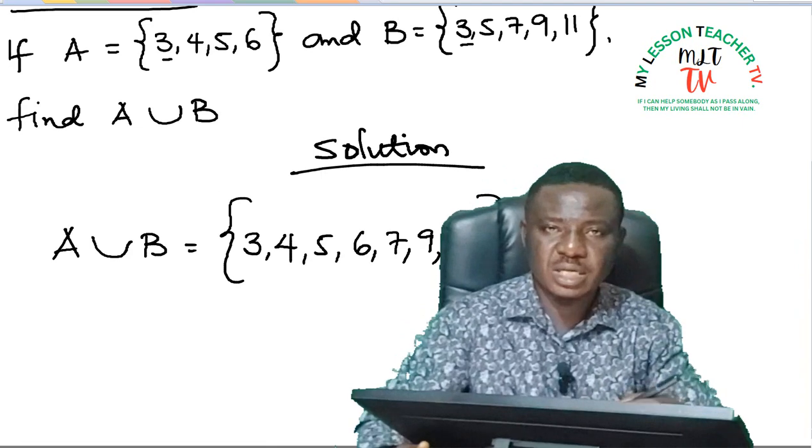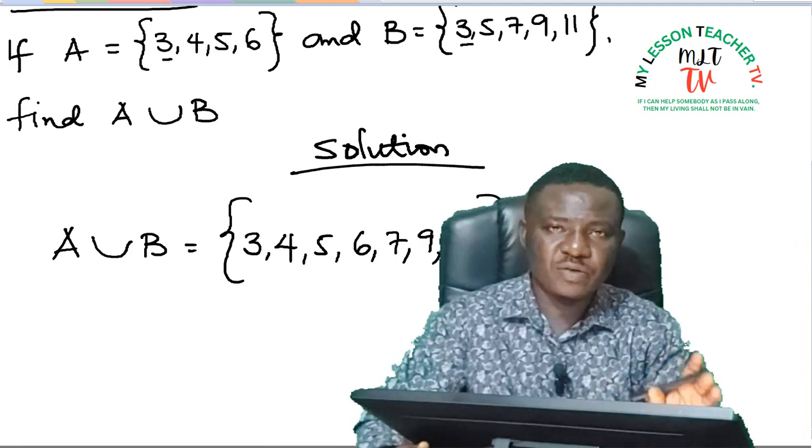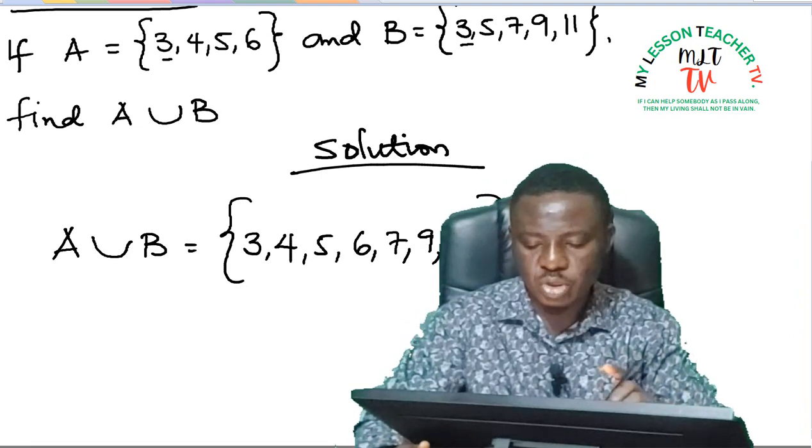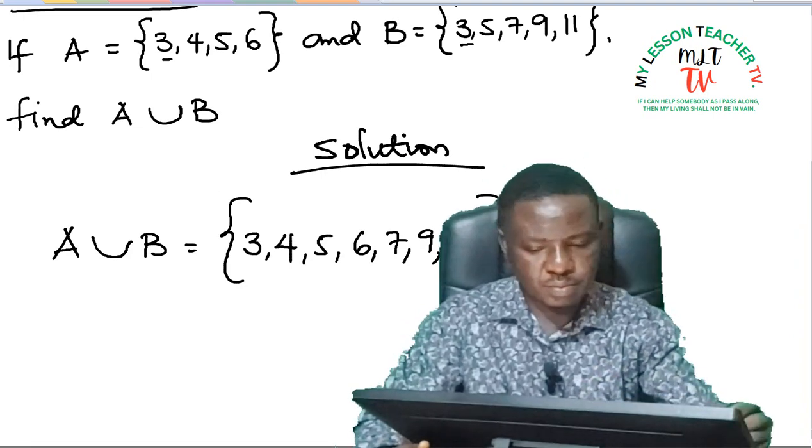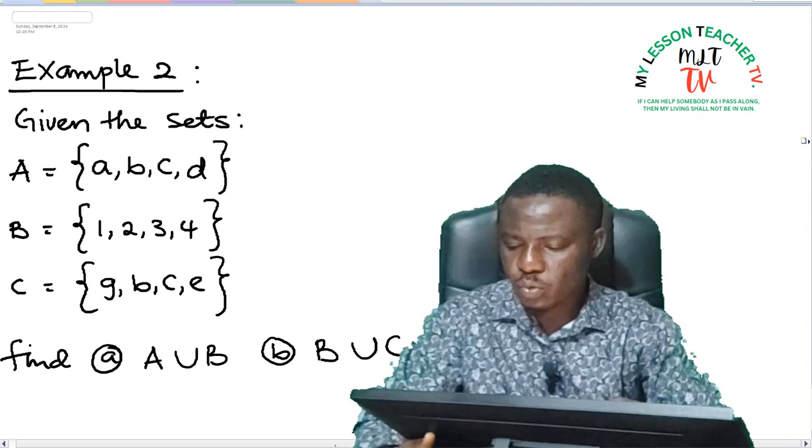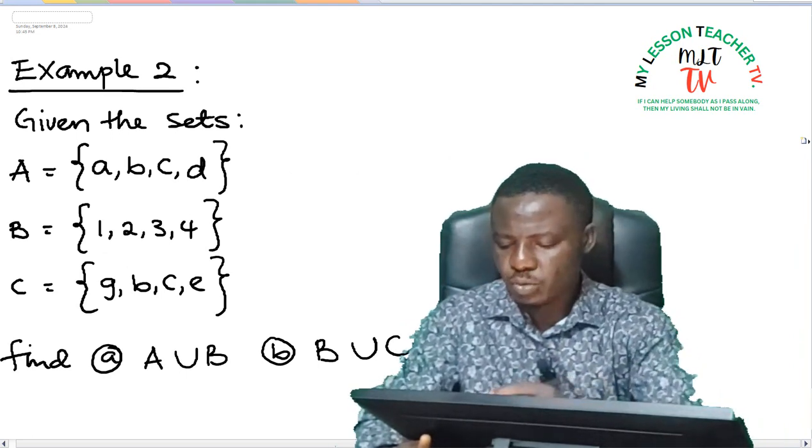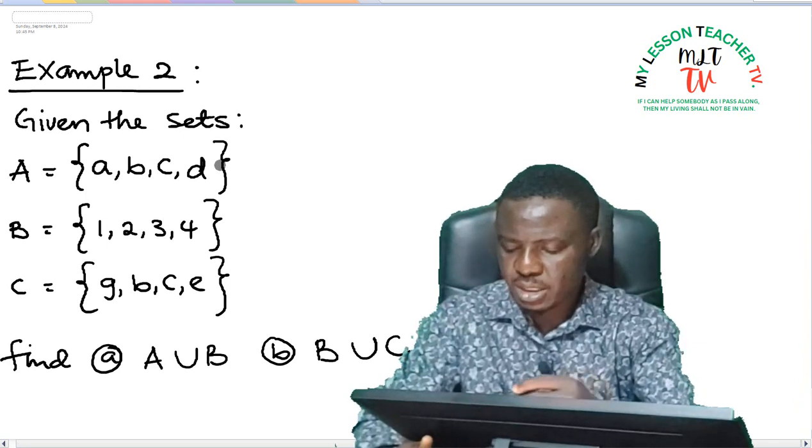Subsequently when we get to Venn diagrams, I shall show you how to carry out the operations using the Venn diagram. In Example 2, we have that given the sets: A to be made of element {a, b, c, d} and set B to comprise of elements {1, 2, 3, 4}, and set C to be made up of {g, b, c, e}.